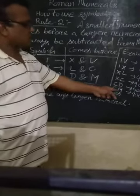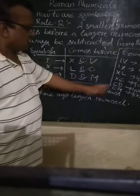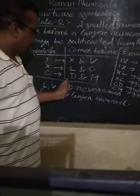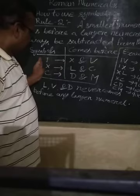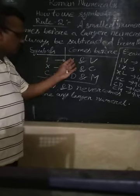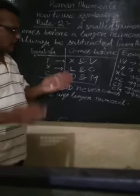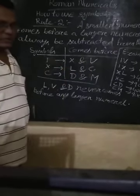So in this way, these numbers can be written by using these three Roman symbols, smaller symbols, before the accordingly larger symbols listed here. Okay? Thank you.